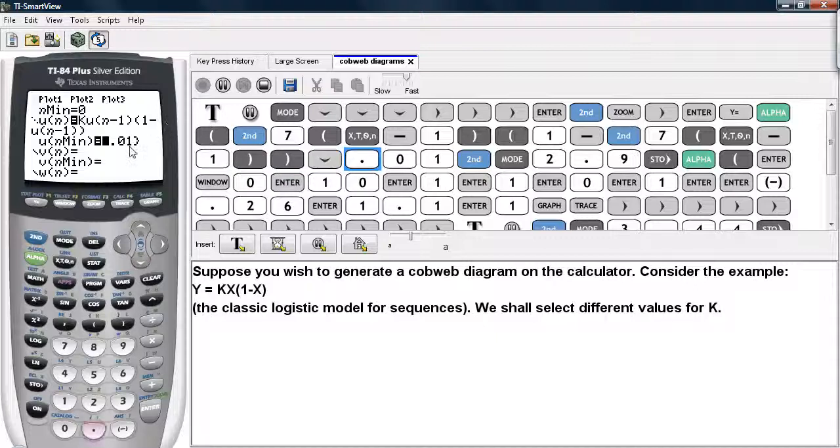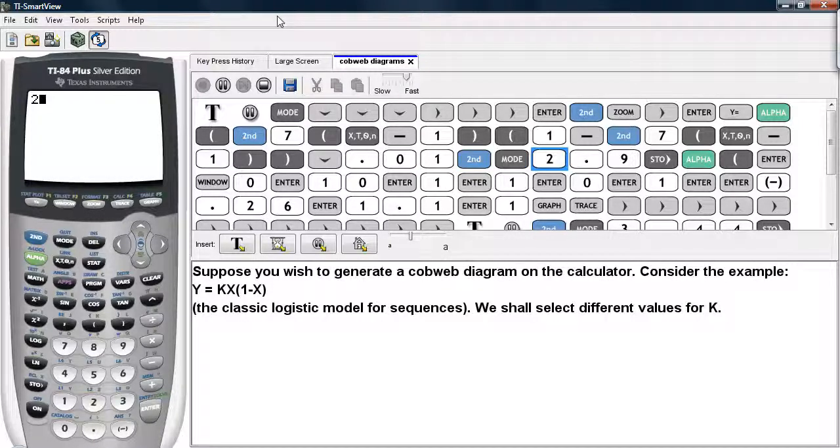Then n min we'll set up to be one hundredth point zero one. Then we'll go back to the home screen and we'll assign a specific value for k. In our case, we'll start off with two point nine.